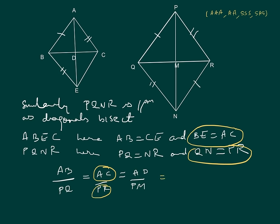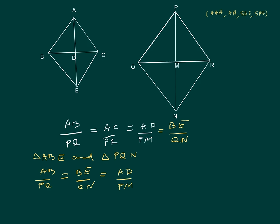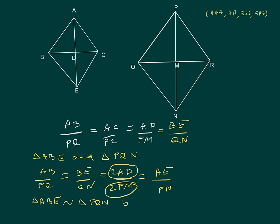So we also get BE/QN equal to these same ratios. Now we can easily prove triangle ABE similar to triangle PQN. Since AB/PQ = BE/QN, and also equals AD/PM, we multiply and divide by 2 so that 2·AD becomes AE and 2·PM becomes PN. Hence triangle ABE is similar to triangle PQN by SSS.